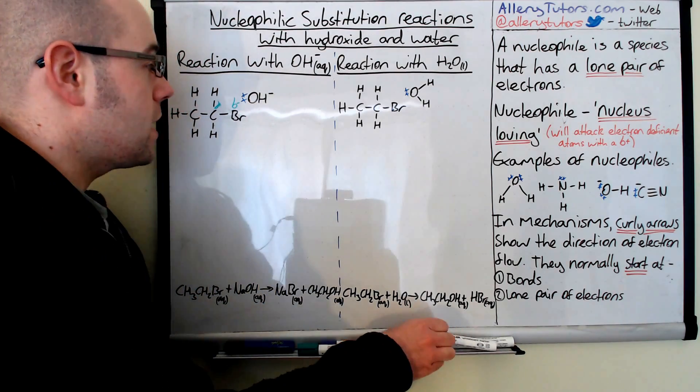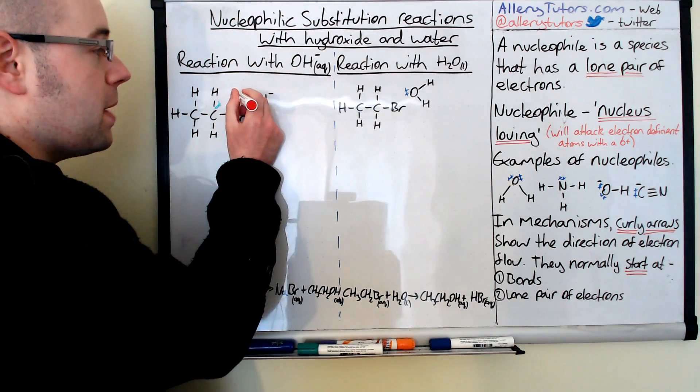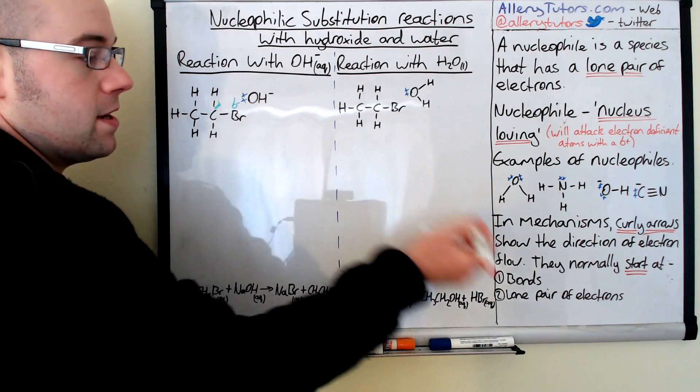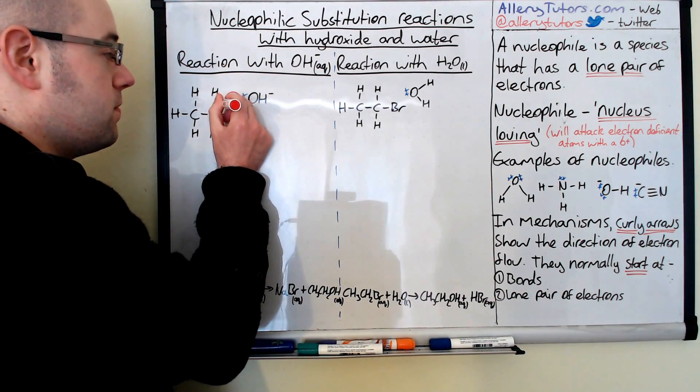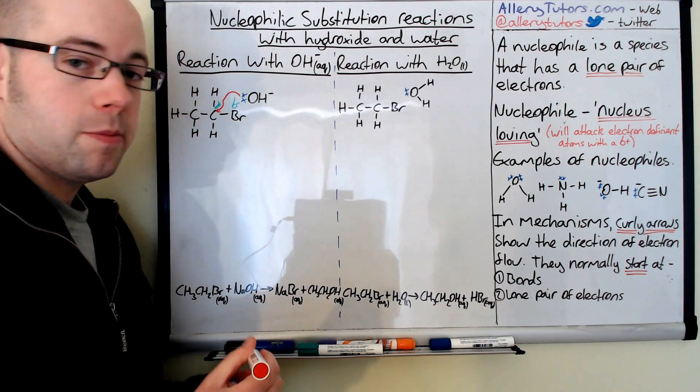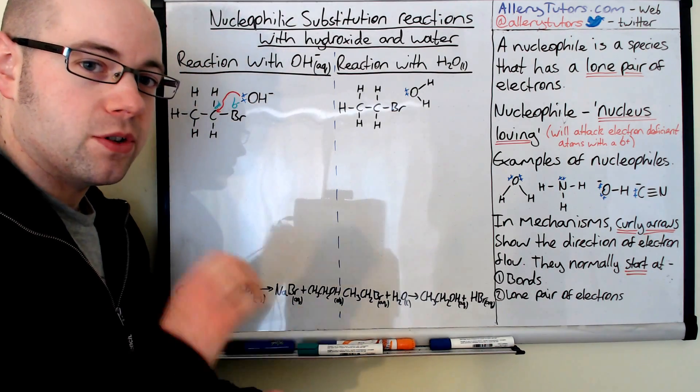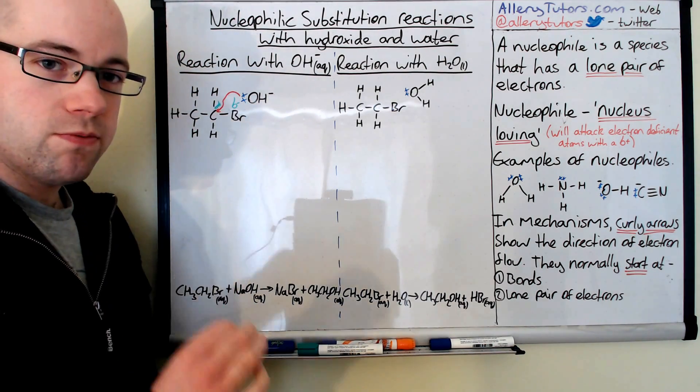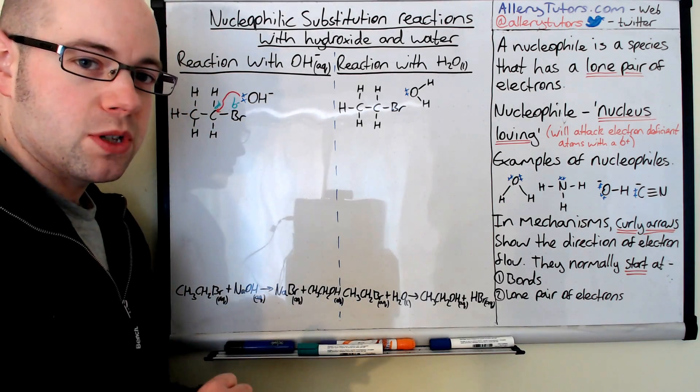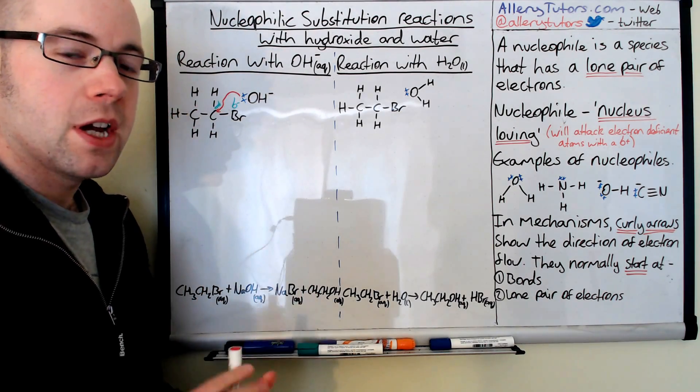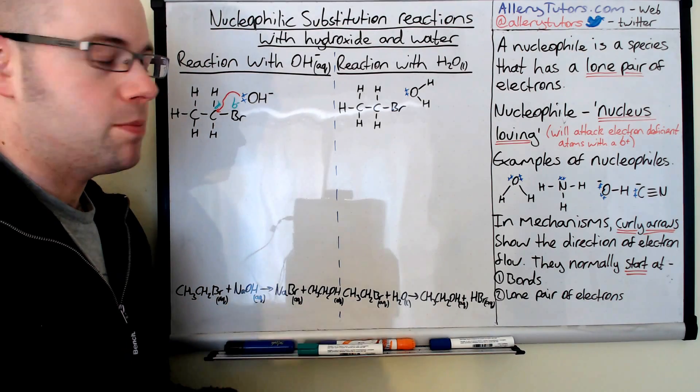The curly arrow is going to go from the lone pair of electrons, because that's what we said where curly arrows start, and it's going to go to an area of electron deficiency, which is going to be the carbon. And you've got to be really careful when you're drawing mechanisms. You've got to be really specific. It's going to go from the lone pair directly to the carbon. You can't be ambiguous, otherwise you won't get marks in the exam. It's really important that you're specific.